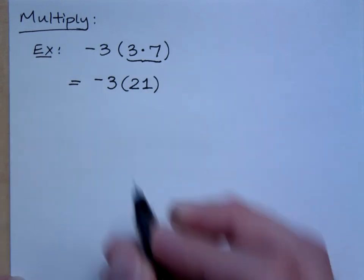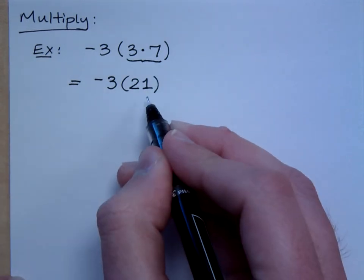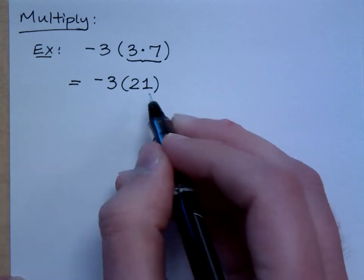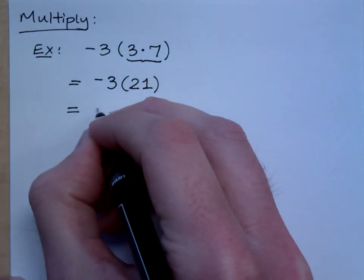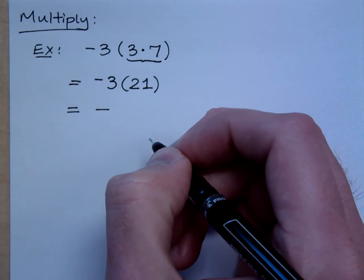So, then my answer here is a negative 3 times 21. And then I finish this. A negative times a positive is what? A negative.